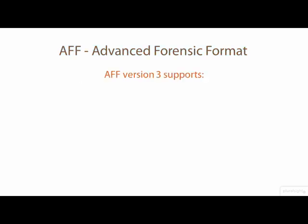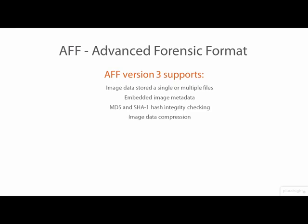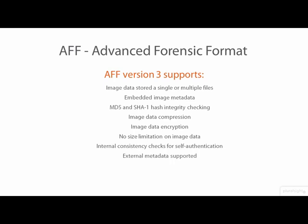AFF has all the features you would expect in a forensic file format, including storage of a digital image as a single or multiple files, support for embedded image metadata, MD5 and SHA-1 hashing integrity checking, and lossless compression of image data. Some extra features in AFF that you may not expect include encryption of image data, no size restrictions for stored image data, internal consistency checks for self-authentication, the ability to store image metadata external to the image data file, and support for AFF files to be digitally signed to provide for chain of custody and long-term file integrity.